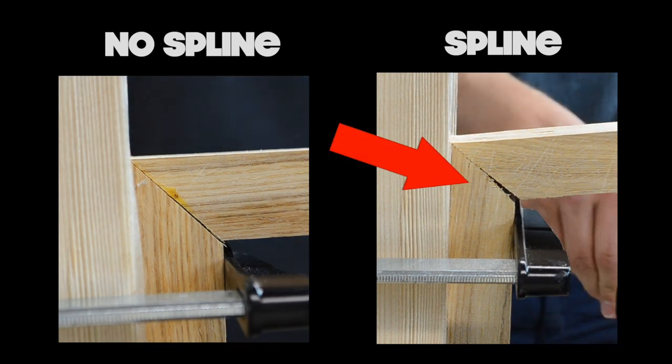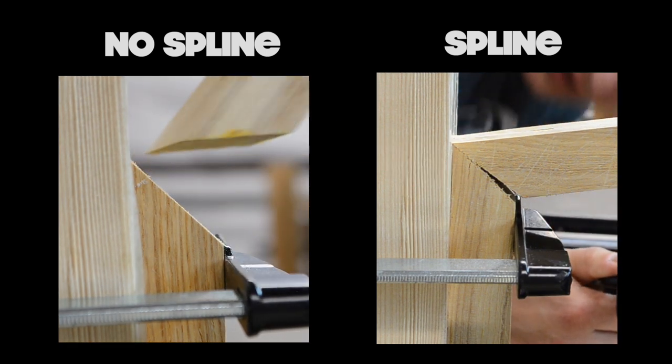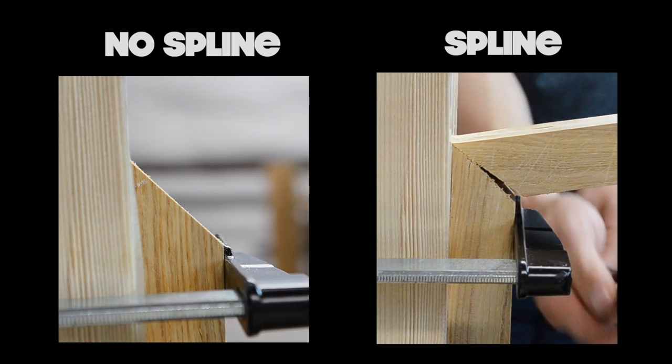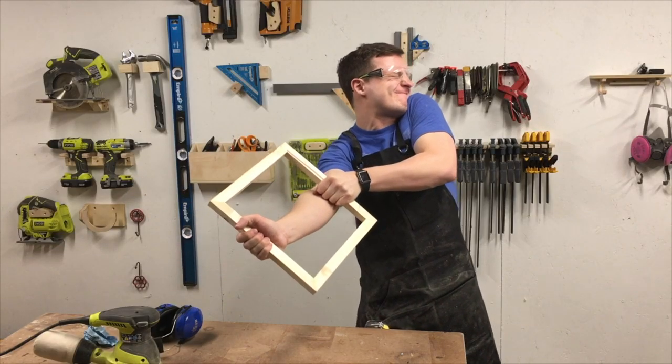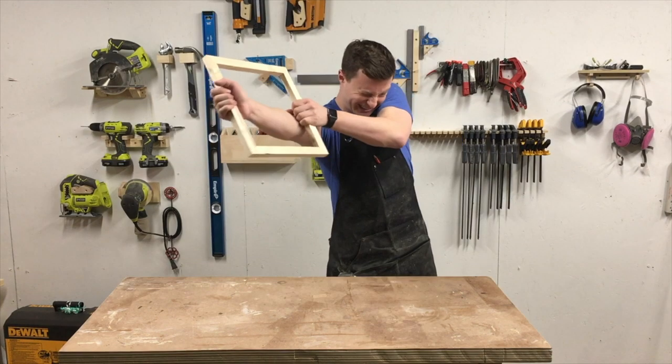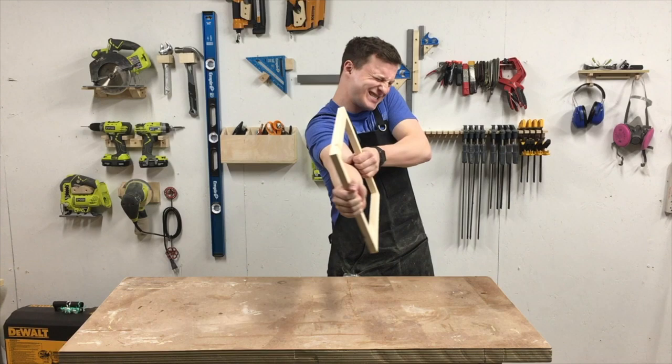When breaking the joints with splines, even though it took roughly the same amount of force, the joint would slowly separate and didn't completely fail. The take home message here is that whether or not adding splines adds strength to a miter joint depends on how you define strength.